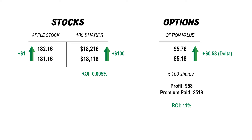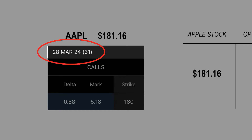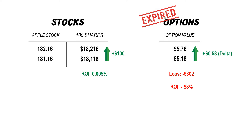And my risk exposure was much less too, because in stock, I had to put up $18,000 to make that $100, with the chance of losing it all — no matter how unlikely — if Apple went to $0. But with buying options, I can only lose what I paid for the option premium, which here is just $518. So why don't I just buy options over stocks every time? Well, if I look back into the options chain, there's a date that says 28th of March, and there's the catch — that's when my option contract expires. So if I were to time travel forward to that expiration date and Apple stock stayed at $182.16, my 100 shares of stock would still be up $100 in profit, but my one call option is now actually down $302.